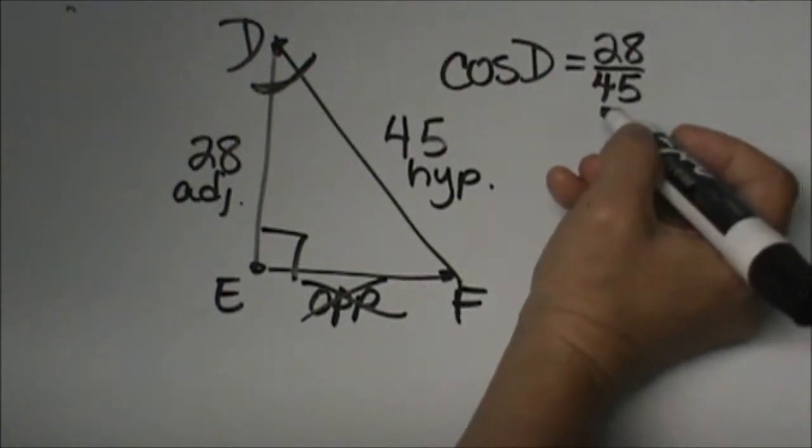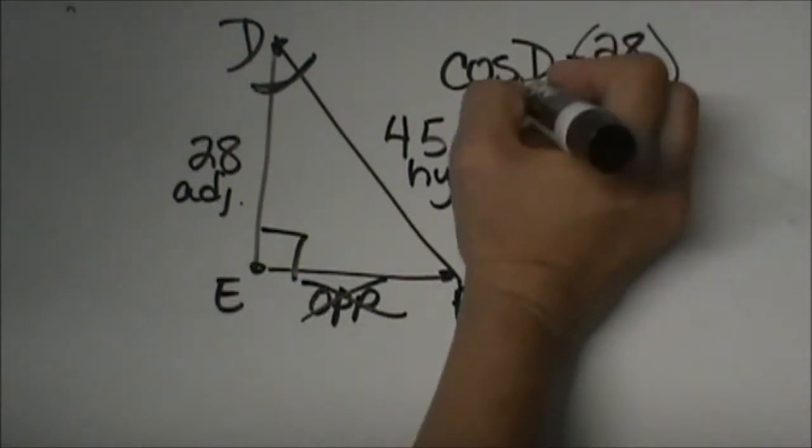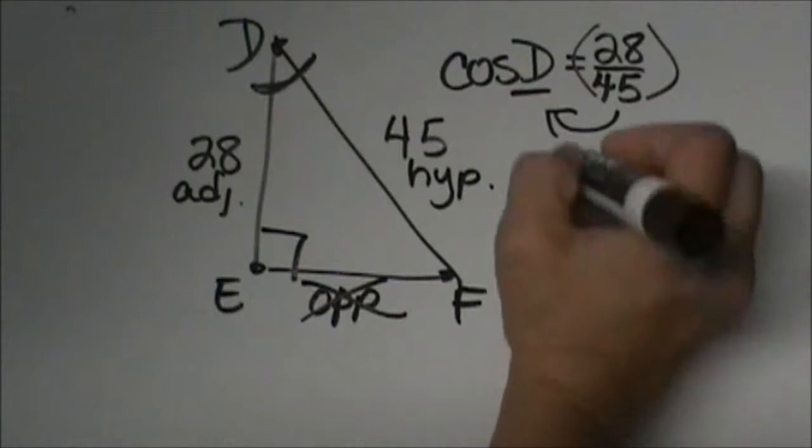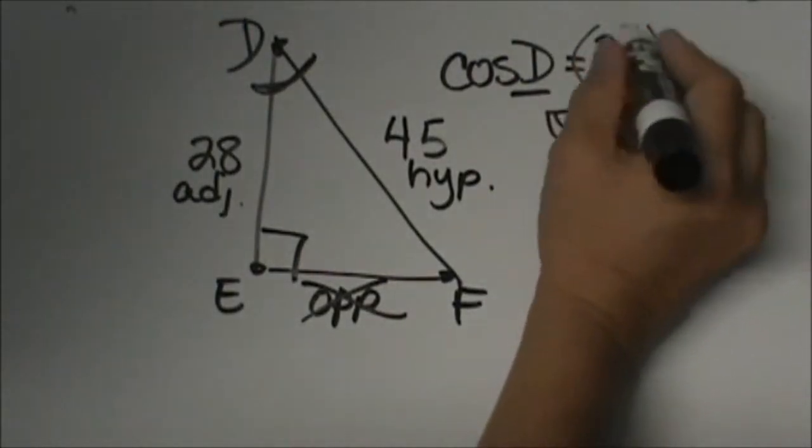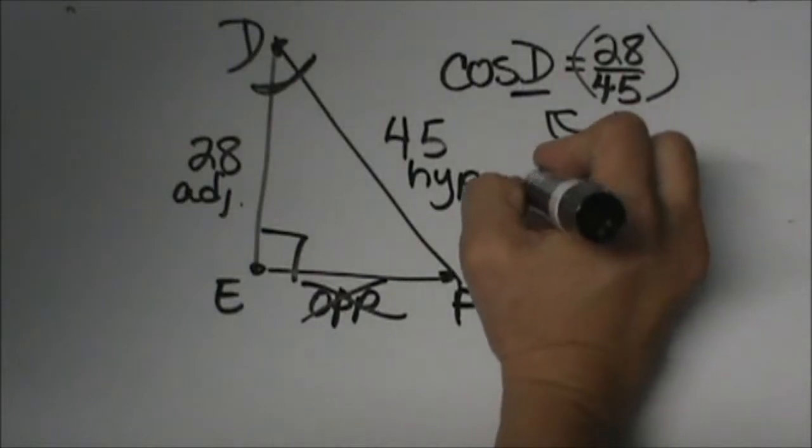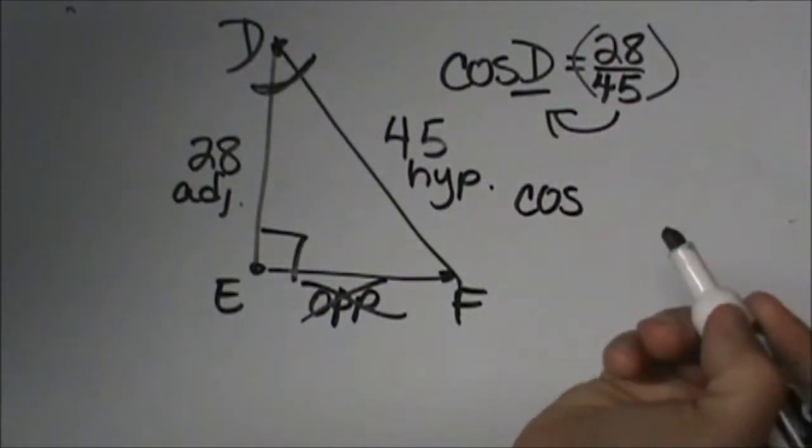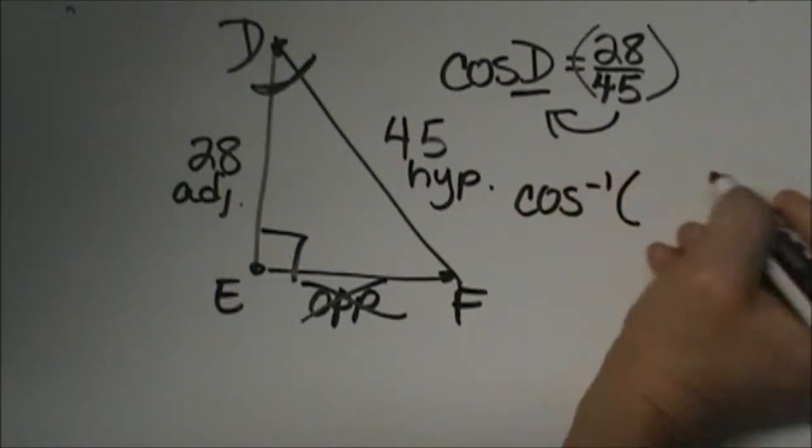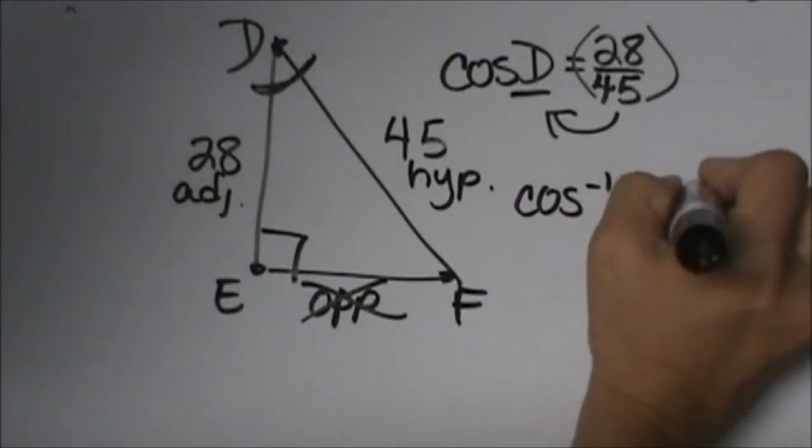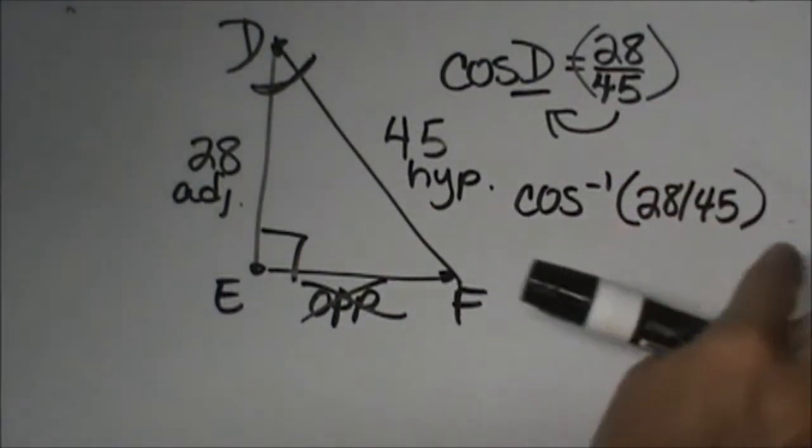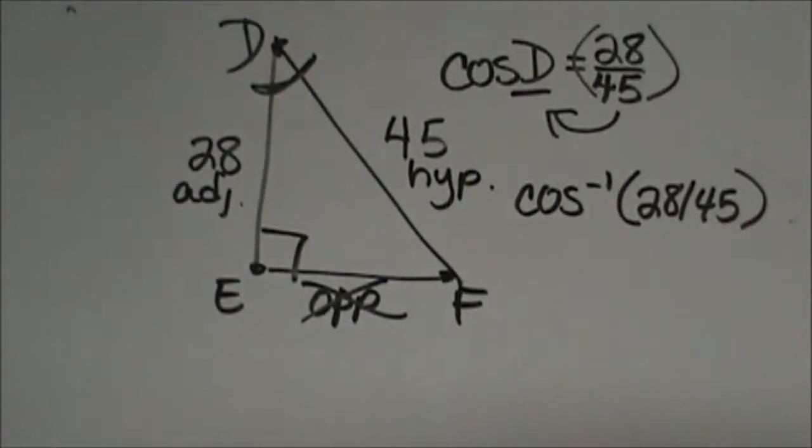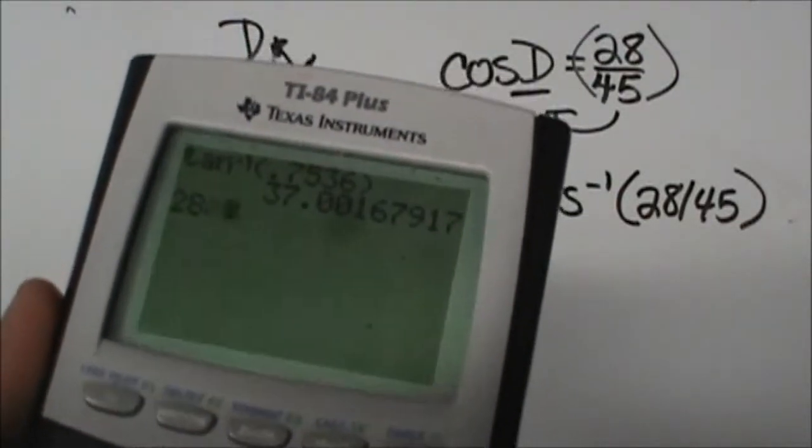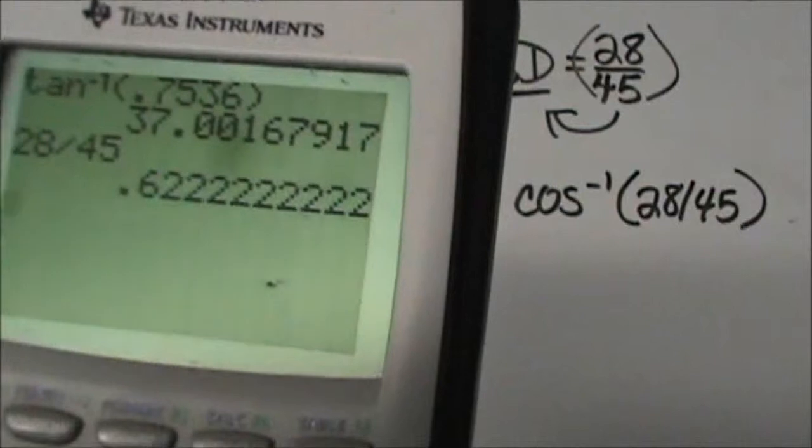To solve it, we're going to set it up a little different this time. Remember, when we're looking for an angle, we're going to work backwards. So we're going to use our inverse button. So you can convert this to a decimal if you want, or we can just put the inverse of the fraction in also. So I'm going to show you both methods. So we're going to take cosine to the negative one of 28 over 45. That's the fractional way. Or if you like the decimals, you can go into your calculator and do 28 divided by 45 and go ahead and get that decimal.